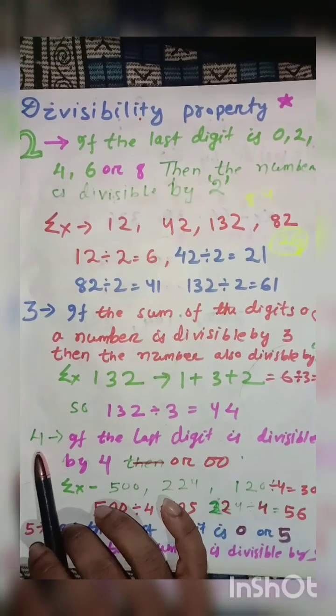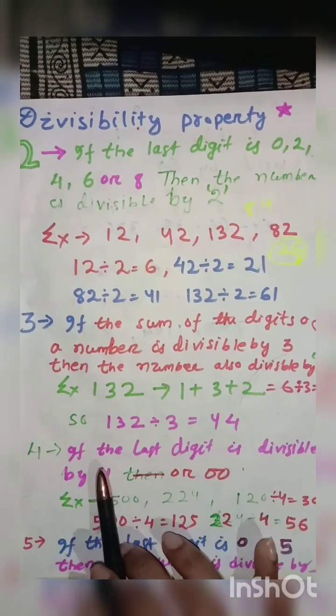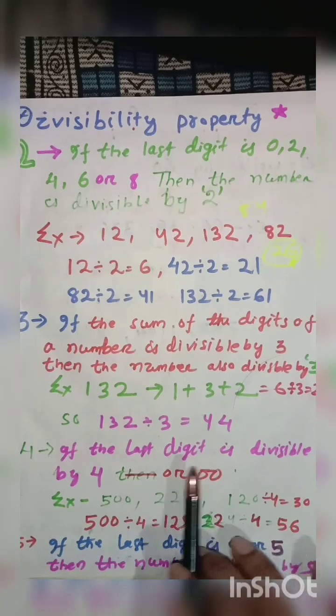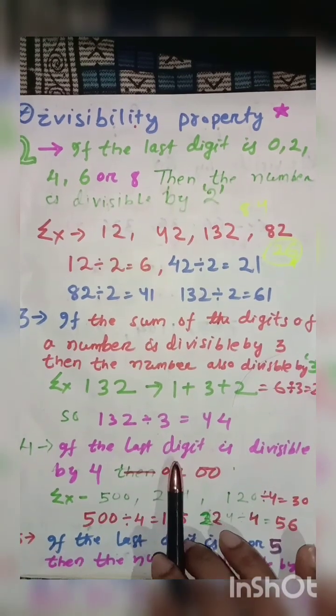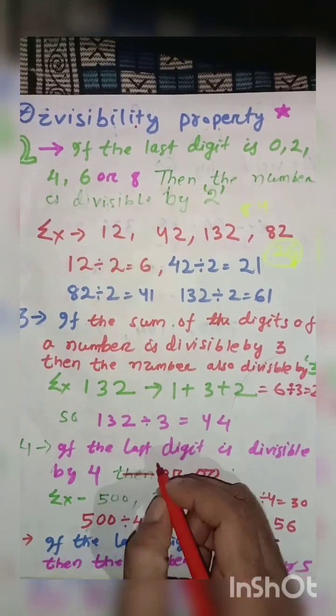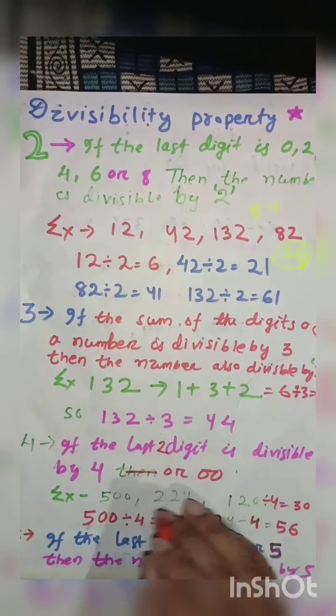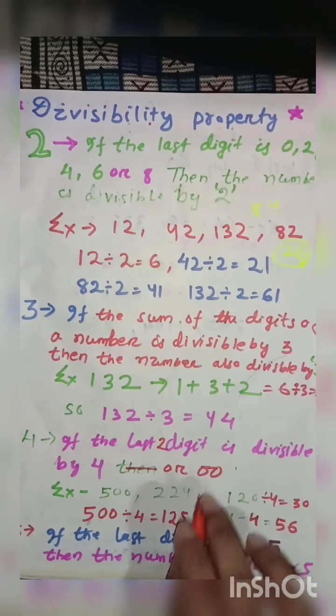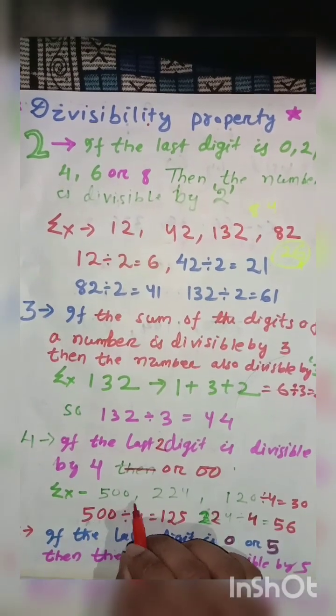Divisible by 4. If the last 2 digits are divisible by 4 or double 0, then undoubtedly this big number is divisible by 4.